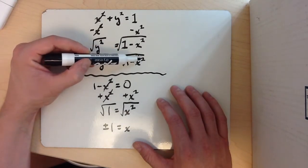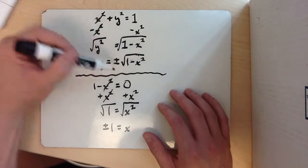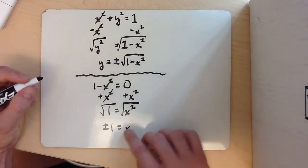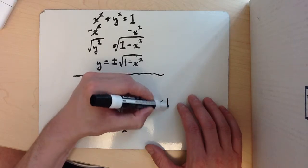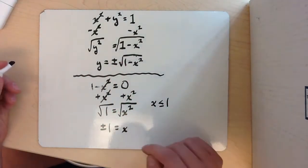So if I put a 2 in for x here, I'm going to do 1 minus 2 squared, which is 1 minus 4. 1 minus 4 is going to be negative 3, and you can't take the square root of a negative and still get a real number out of it. So I know that x has to be less than or equal to 1, because 2 will not work. 2 is outside of those boundaries.